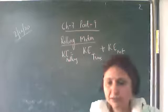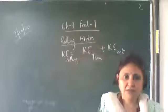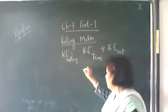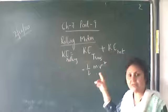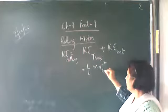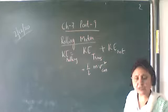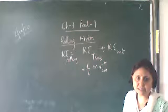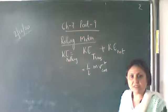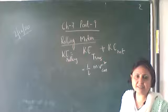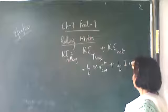The translational kinetic energy is given by half mv squared, where v is the velocity of the center of mass. The mass here is the total mass of the body, because at the center of mass the whole mass of the body is supposed to be concentrated.